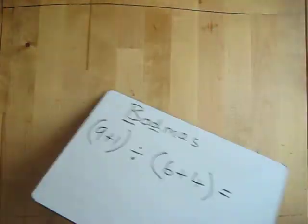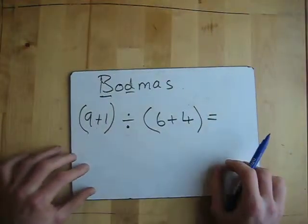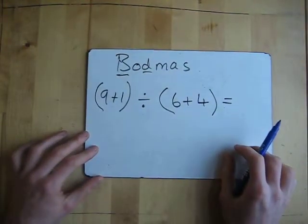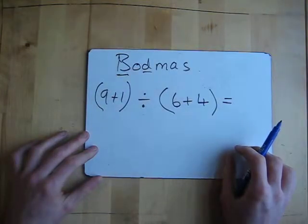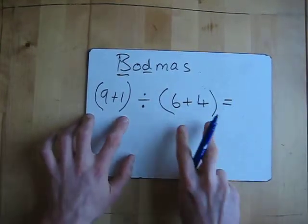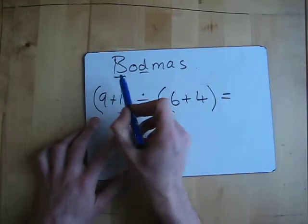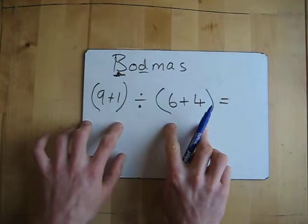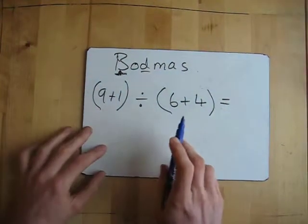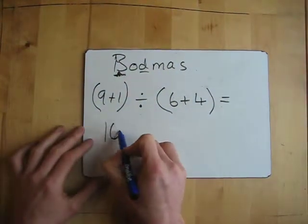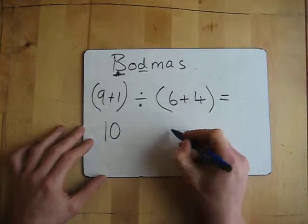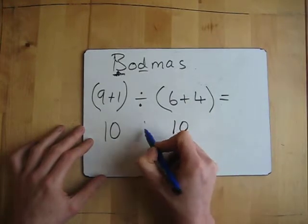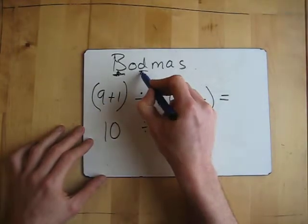Let's try another one. So we've got 9 plus 1 divided by 6 plus 4. But what you'll notice is these two sets are in brackets. And in BODMAS, brackets is the first thing that we must do. So I'll do the brackets first. So I'll do 9 plus 1, which is 10. Then I'll do 6 plus 4, which is also 10.